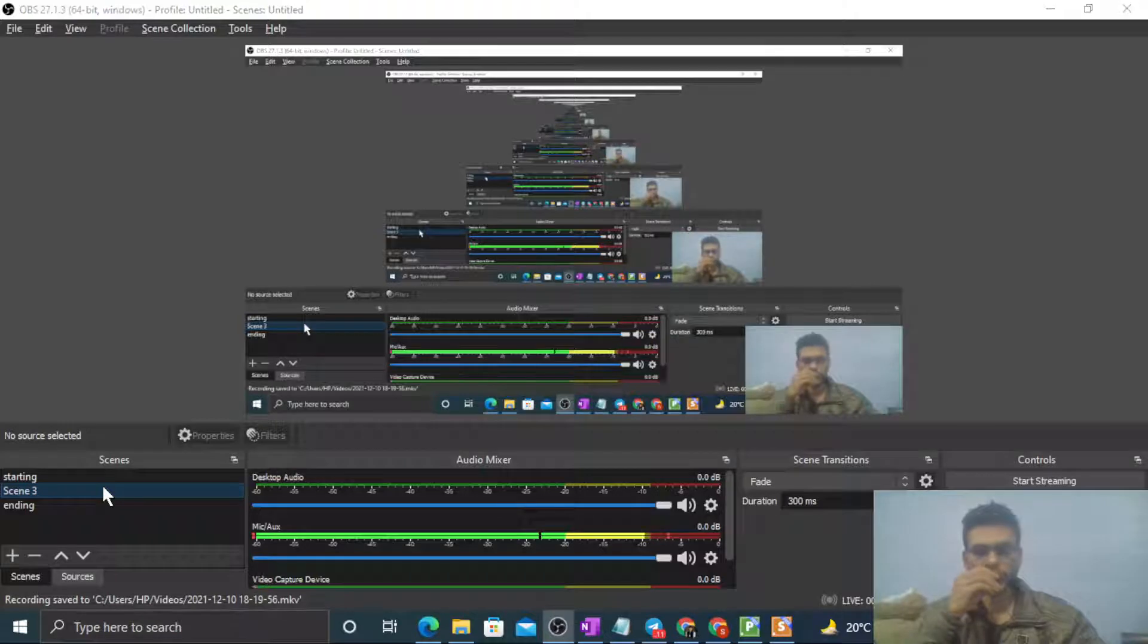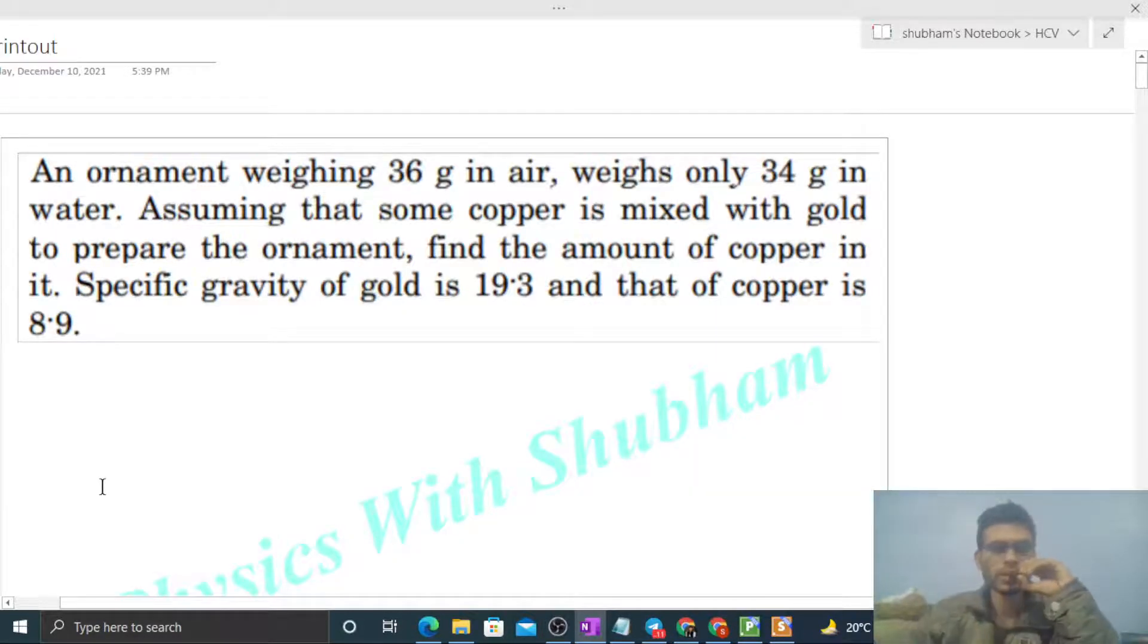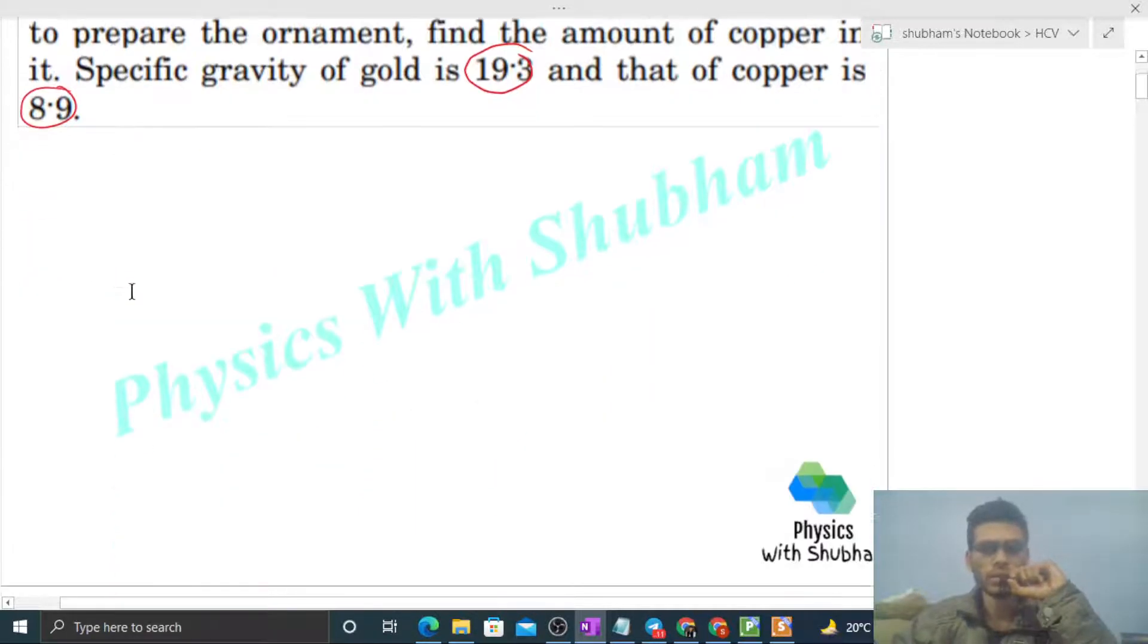Okay, hi everyone. Today let's discuss one interesting problem. It says an ornament weighing 36 grams in air weighs only 34 grams in water. Assuming that some copper is mixed with gold to prepare the ornament, find the amount of copper in it. The specific gravity of gold is 19.3 and that of copper is 8.9.